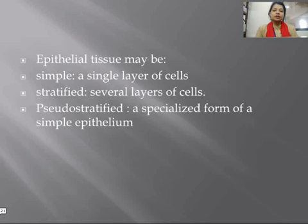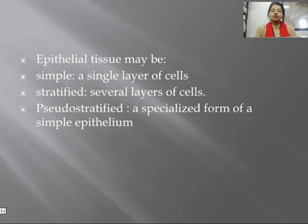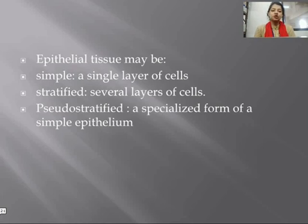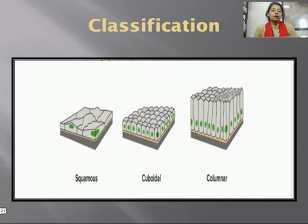Epithelial tissue can be broadly classified as simple, stratified, and pseudo-stratified. Simple epithelial tissue consists of a single layer of cells; stratified consists of multiple layers of cells; and pseudo-stratified is a specialized, modified form of simple epithelial tissue.